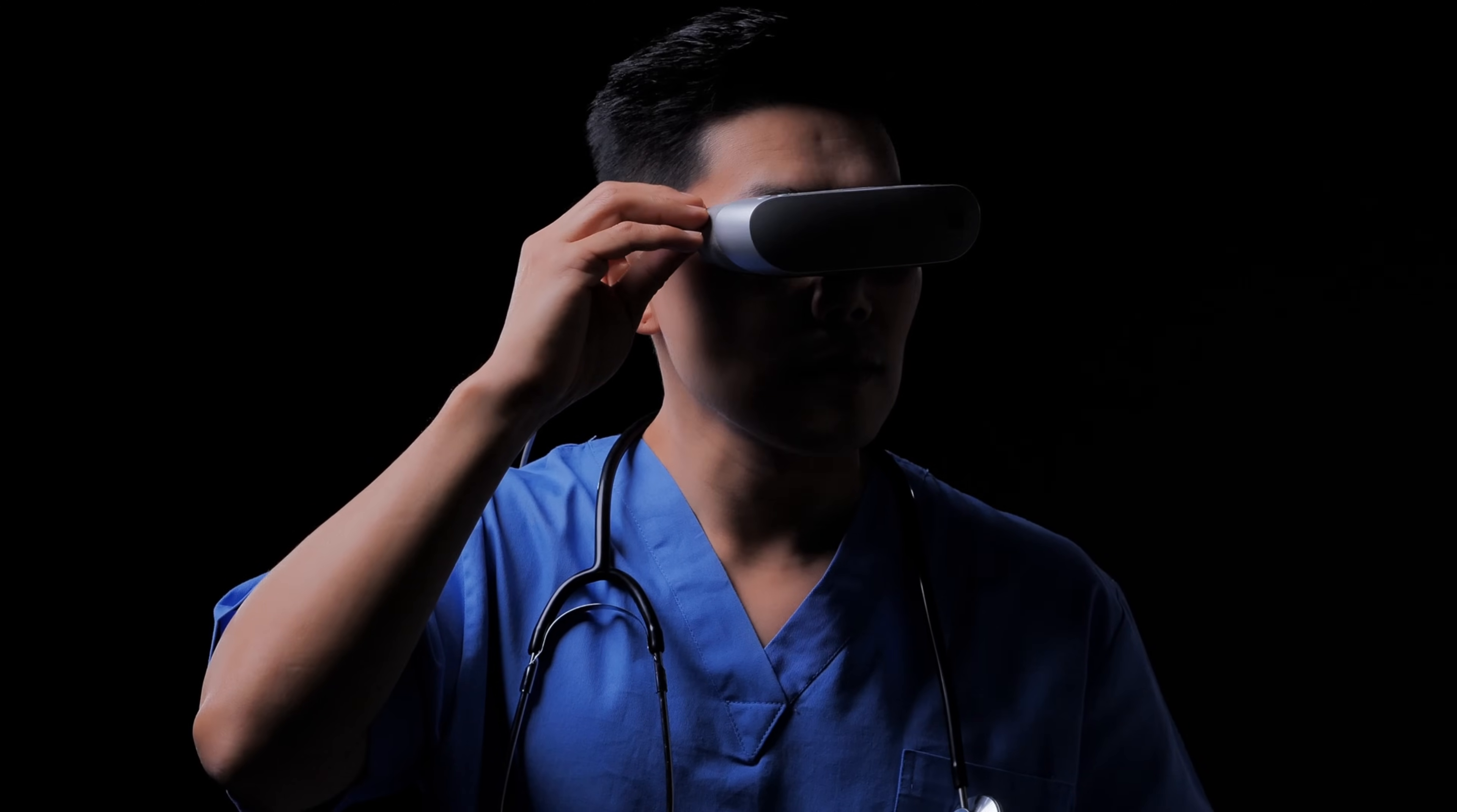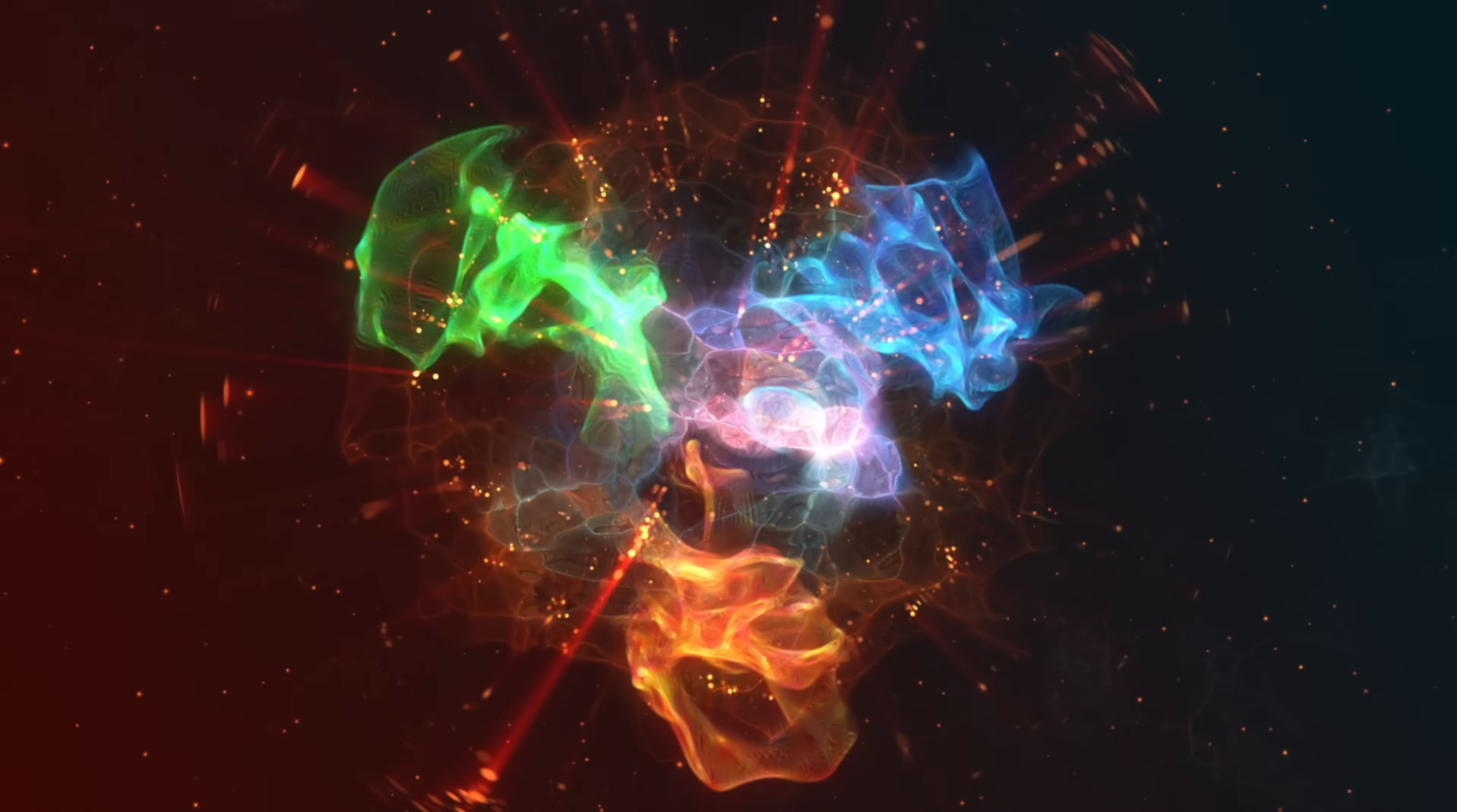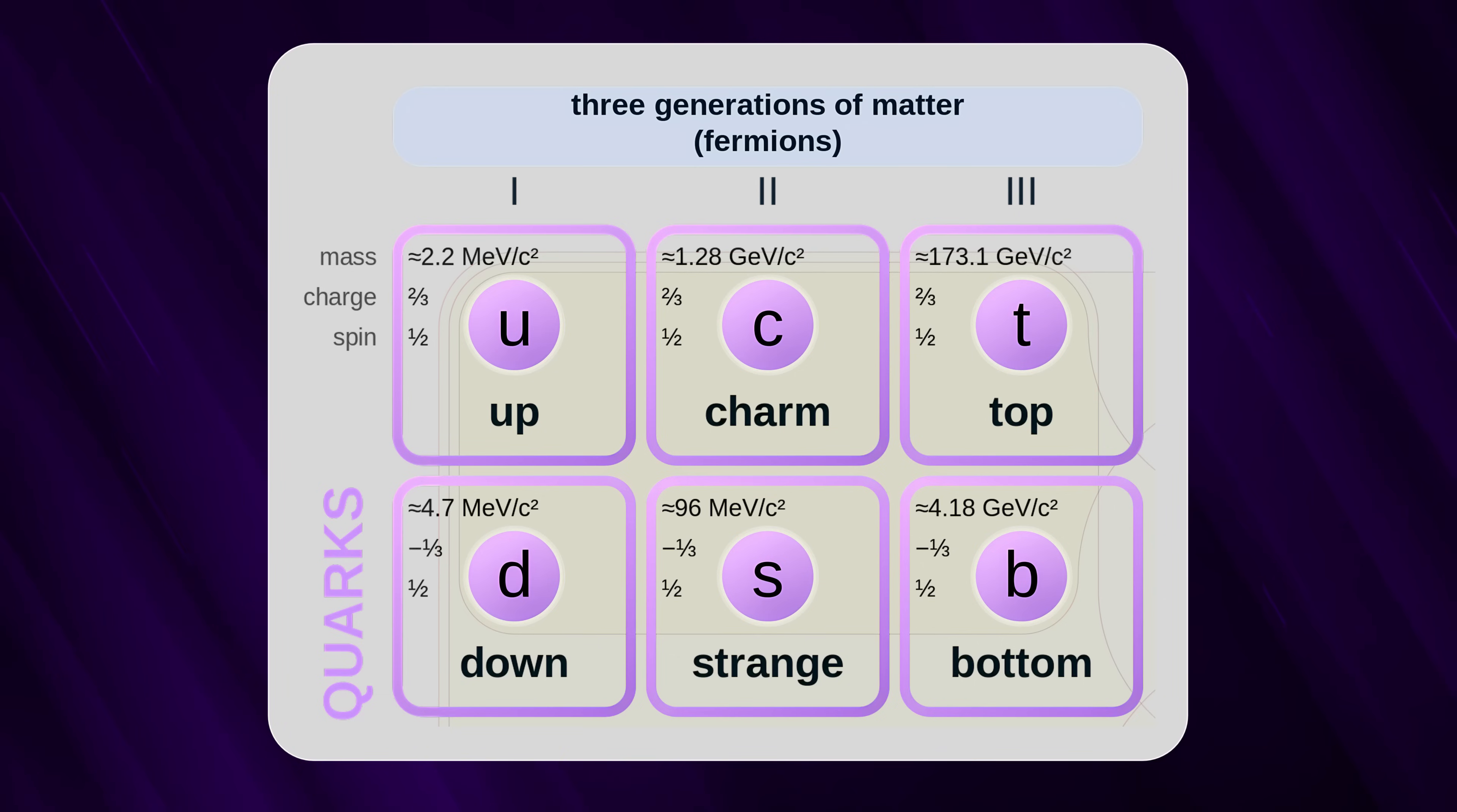Alright, enough with the intro. Let's talk quarks. Quarks are the true building blocks of protons and neutrons, which are the heavyweights of the atomic nucleus. There are six types of quarks, each with its own quirky personality.